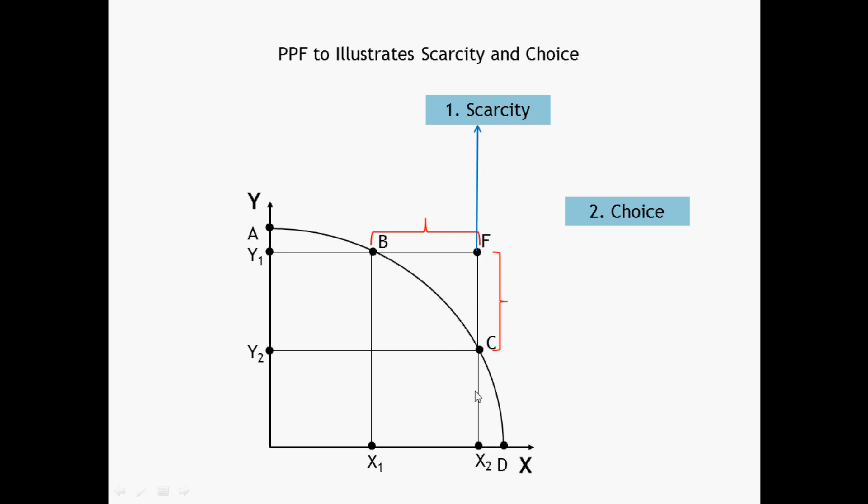This way, there are numbers of combinations of X and Y along the production possibility frontier. But which one of the combinations are suitable for the society? Is it B or C or some other combinations? Which one should we choose?